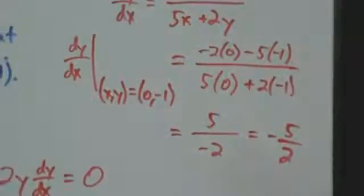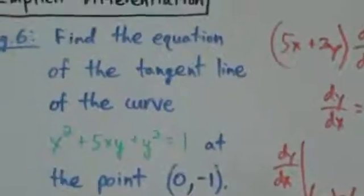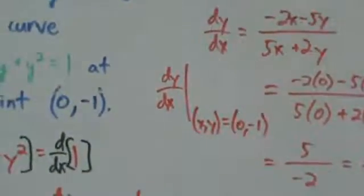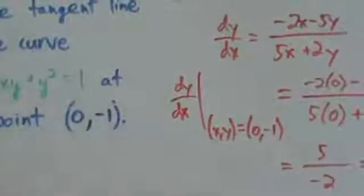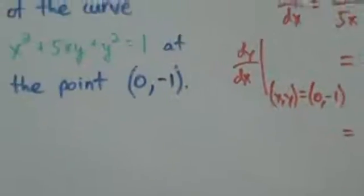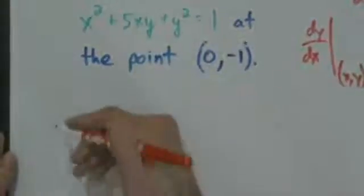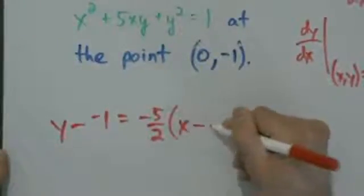So we've found the slope of the tangent line — that's pretty much the bulk of the work. The rest is kind of just a pre-calculus thing; we use the point-slope form of the line to get the equation. We have the slope of negative 5/2 and the point (0, -1), so using point-slope form: y minus negative 1 equals negative 5/2 times (x minus 0).